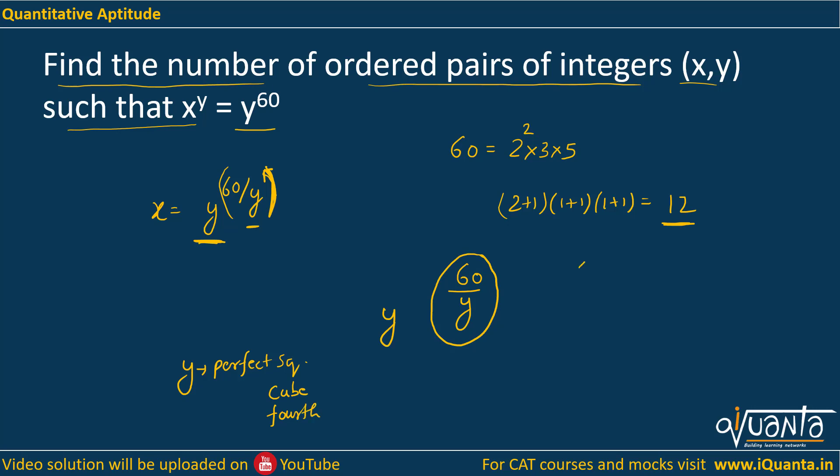So if we talk about perfect squares, we have 1, it has been included in the factors. 4 included in the factors. 9, if I put y equals to 9, I will be getting 3 square to the power 60 by 9. So if the 2 in power is multiplied to 60 by y, that would not make it a whole number.